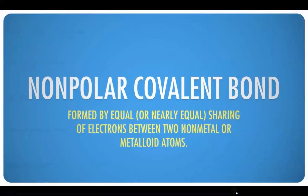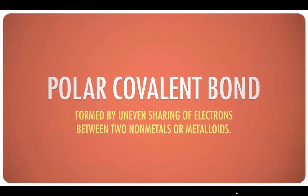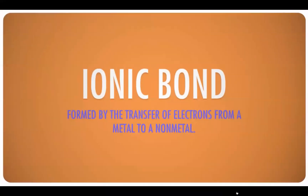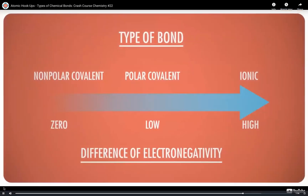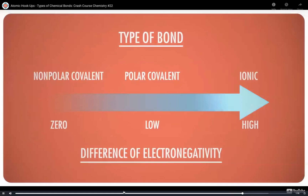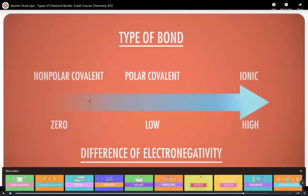So those are our three types of bonds: nonpolar covalent — formed by the equal or nearly equal sharing of two electrons between nonmetal or metalloid atoms; polar covalent — formed by the uneven sharing of electrons between two nonmetals; and ionic — formed by the transfer of electrons from a metal to a nonmetal. Just like human relationships, bonds don't always have well-defined boundaries. Everything is a continuum.